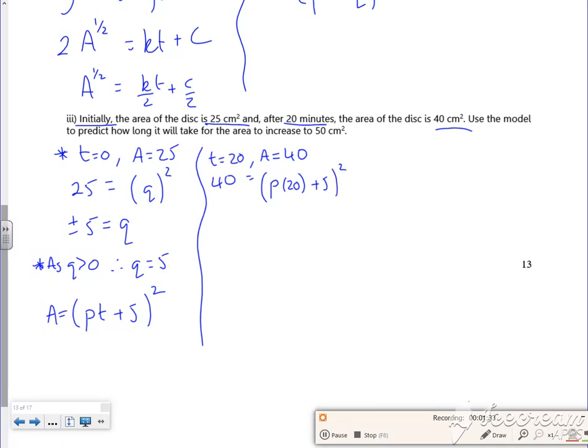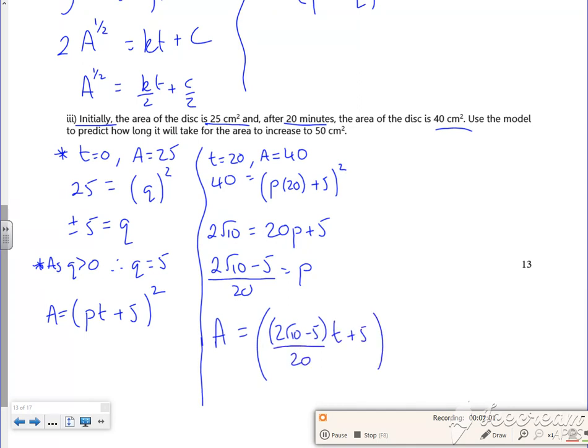So root 40, which would be 2√10, is 20p plus 5. So (2√10 - 5)/20 is p. That's a bit messy. So A is p, which is that mess, (2√10 - 5)/20 times (t + 5) squared.